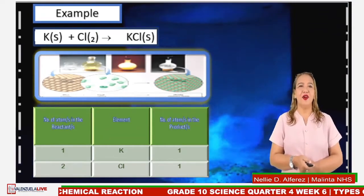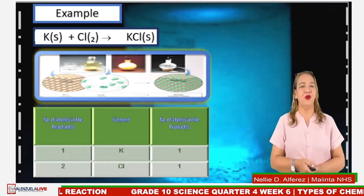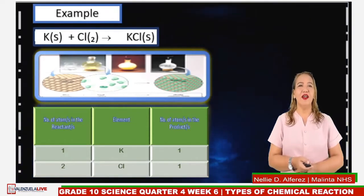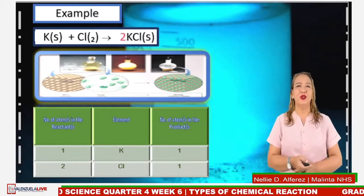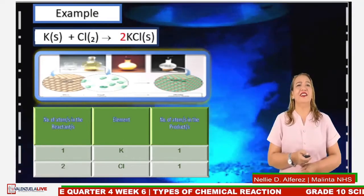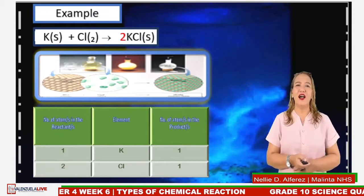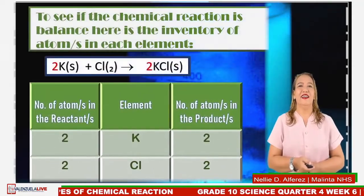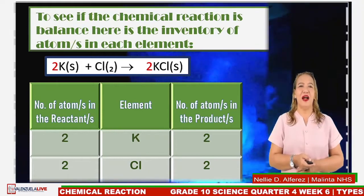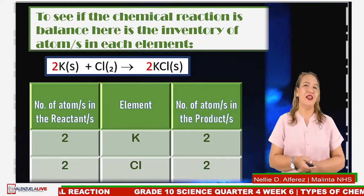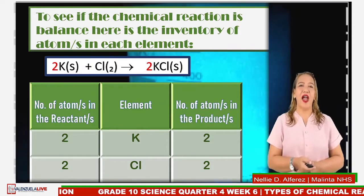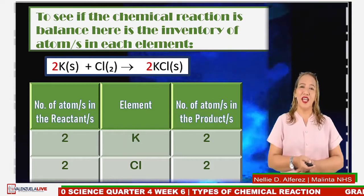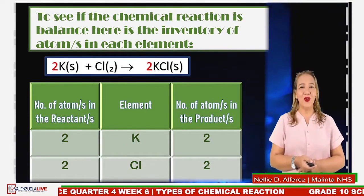In the reactant side, potassium is 1 and chlorine is 2, while on the product side, potassium is 1 but chlorine is 1. So, using trial and error, we balance the equation by adding coefficient 2 to the product potassium chloride, and another coefficient 2 to potassium. Now potassium on both sides is 2, and chlorine on both sides is 2. So the equation is balanced.